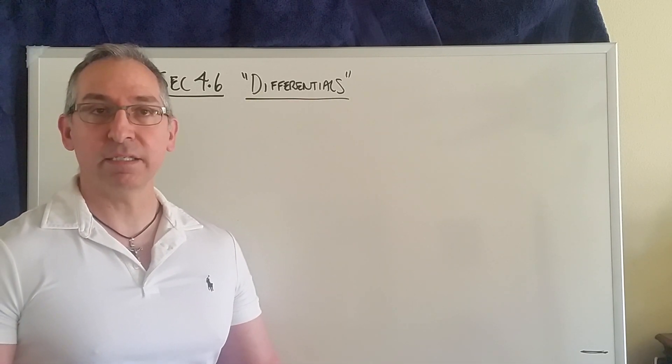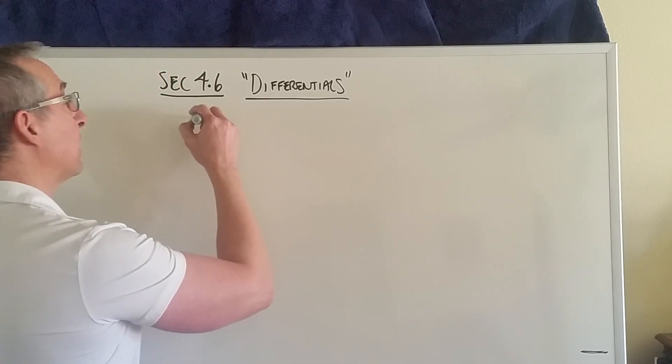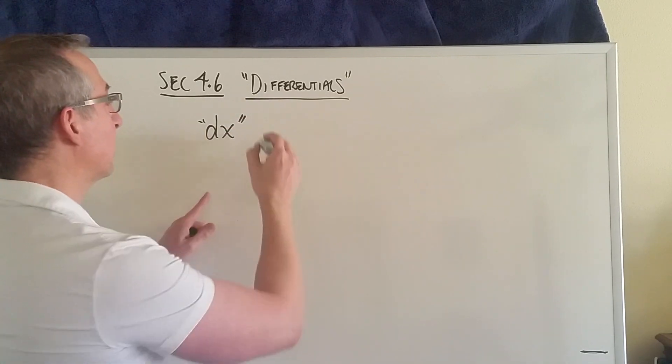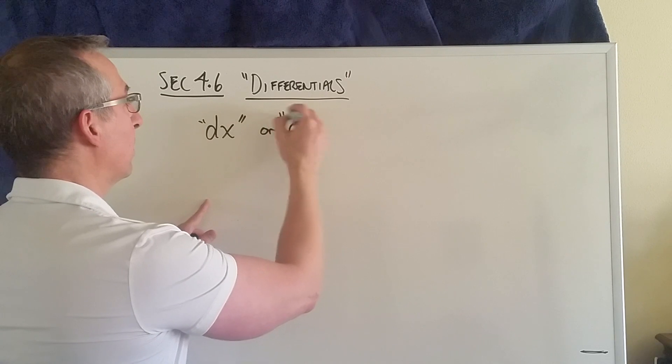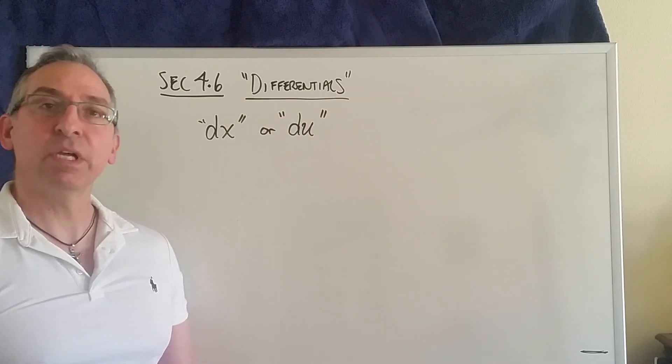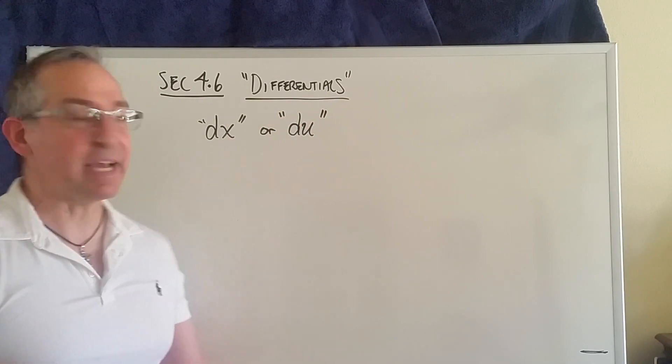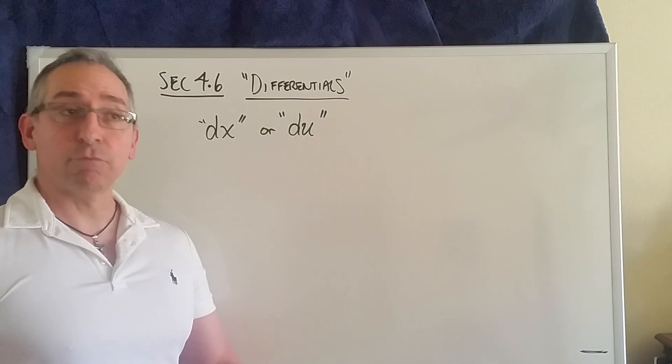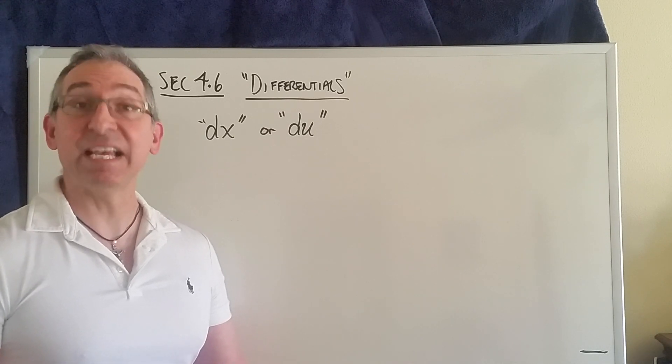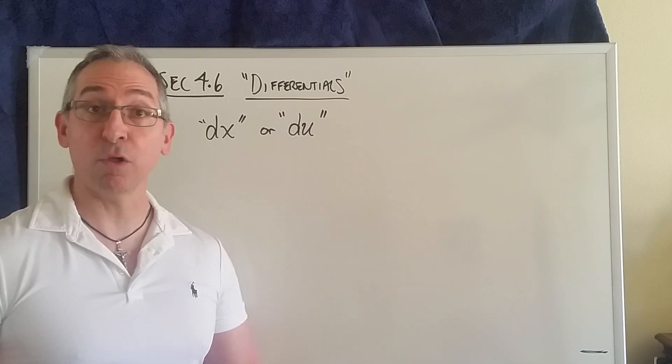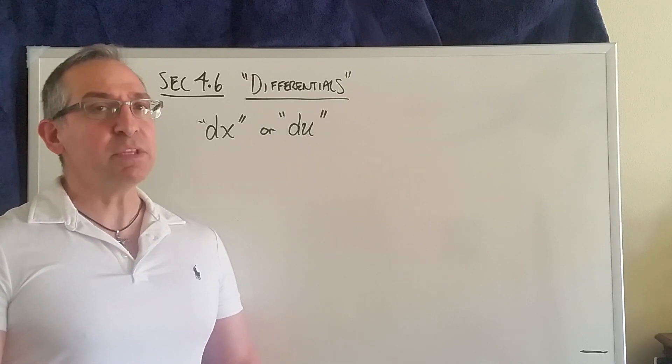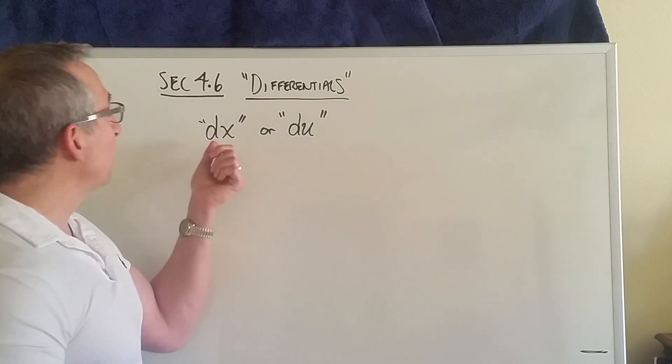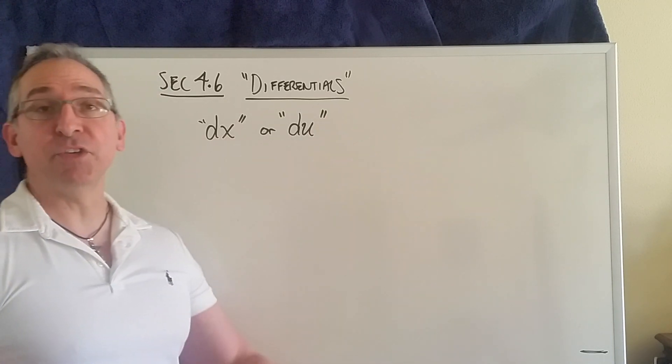Differentials are extremely small quantities symbolized by expressions such as dx or du. This means a very, very tiny amount of x, a very tiny amount of u. Some books refer to these as infinitesimals—something that is infinitesimally small, not so small that it's actually equal to zero, but too small you can't see with a microscope.